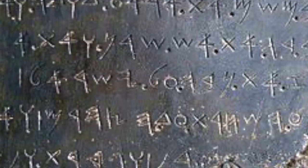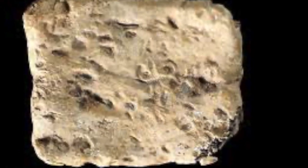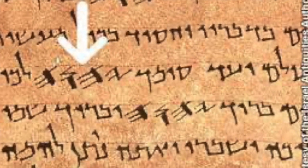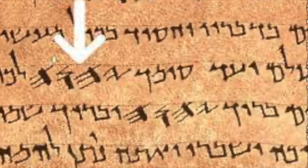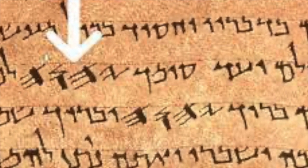The oldest known inscription of Y-H-W-H dates to 840 BCE, on the Mesha Stele. The most recent discovery of a Y-H-W-H inscription, dating to the 6th century BCE, was found written in Hebrew on two silver scrolls recovered from Jerusalem. In the Dead Sea Scrolls and other Hebrew and Aramaic texts, Y-H-W-H was often written in Paleo-Hebrew script, showing that it was treated specially.